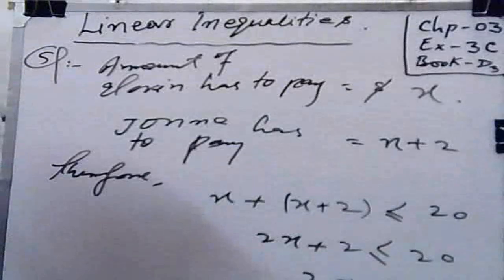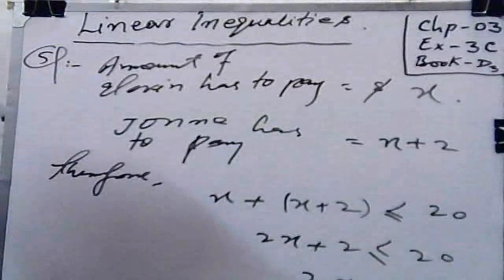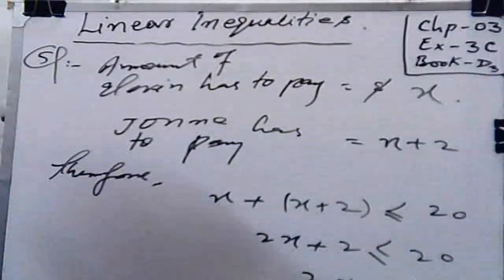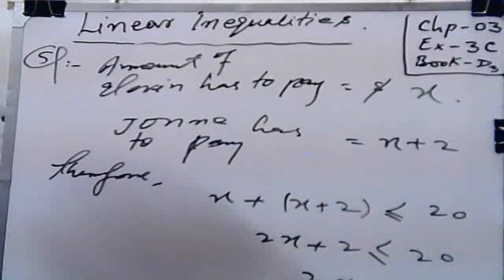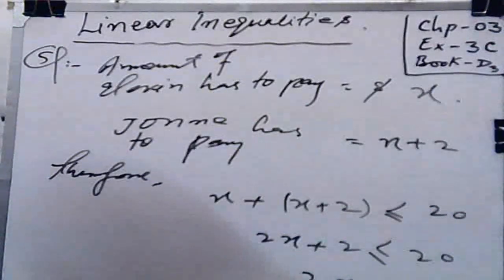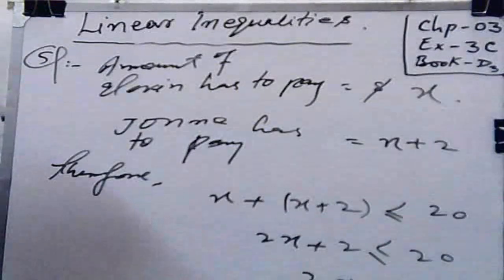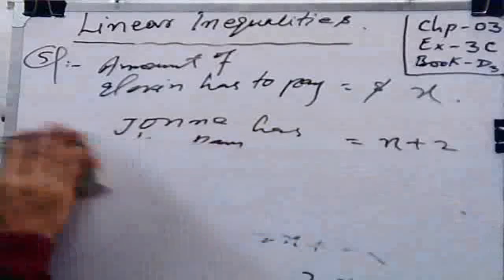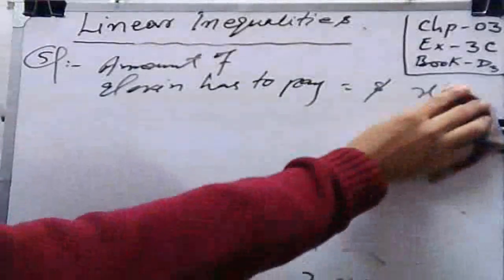Coming to question number 6: Ali scored 74, 82, and 60 for three of his mathematics tests. What is the lowest mark he must score for his fourth test if he aims to achieve an average of at least 78 for the four tests? Apply the same inequality methodology here in question number 6.